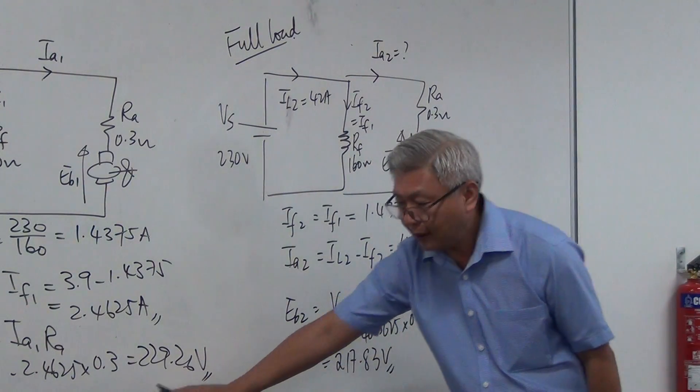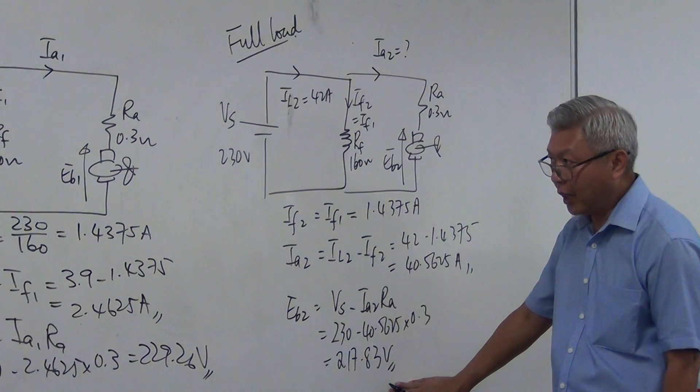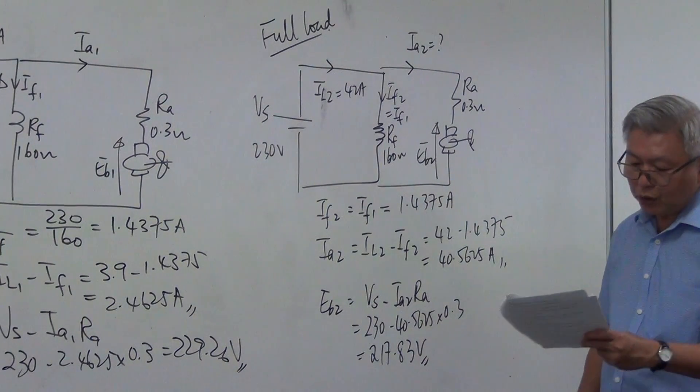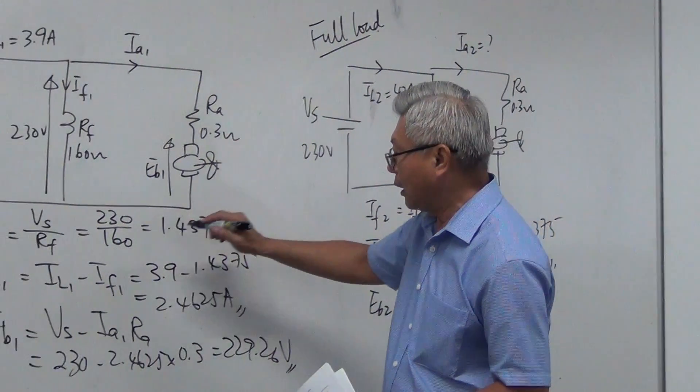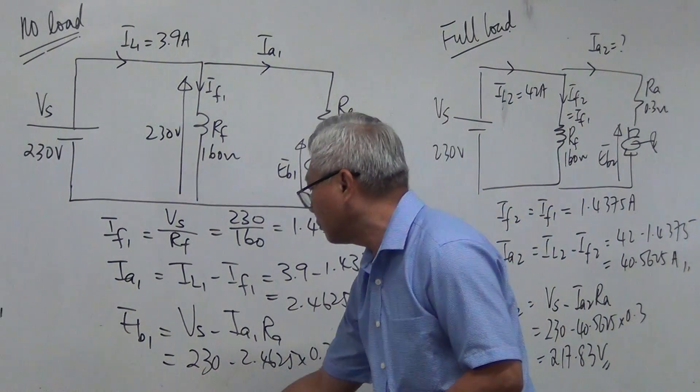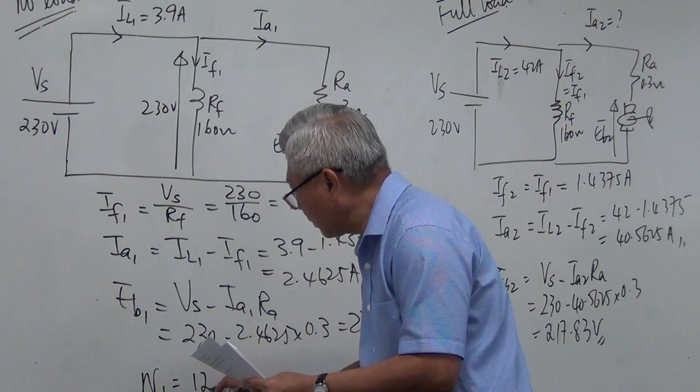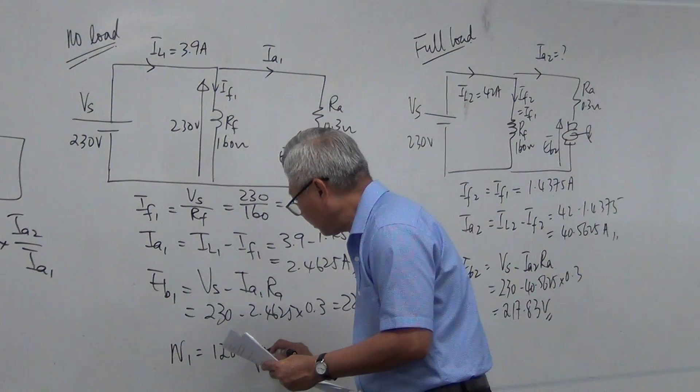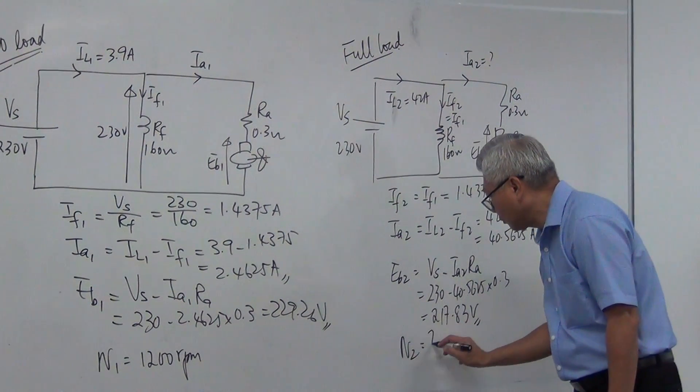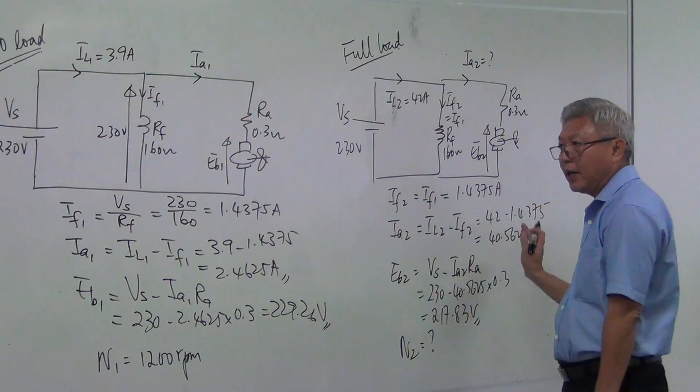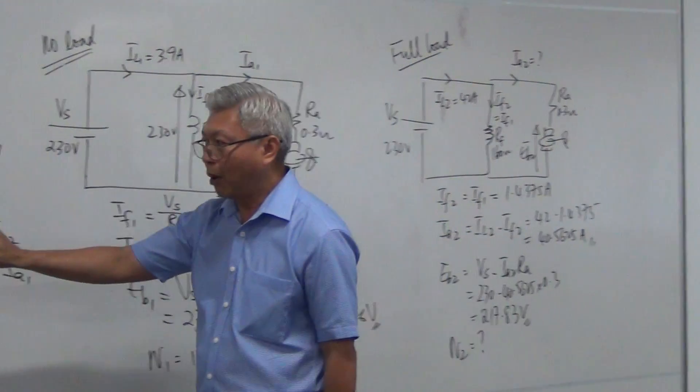Now I have Eb1, I have Eb2. And I also need to tell you about the speed. Now at no load, the original speed N1 is equal to 1200 RPM. So now I want to find N2.